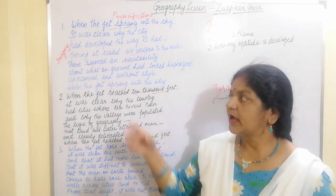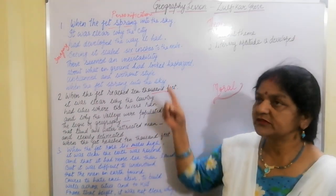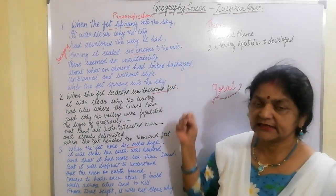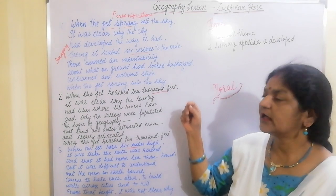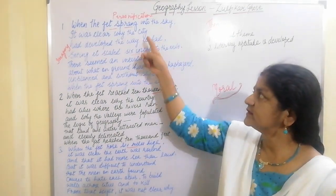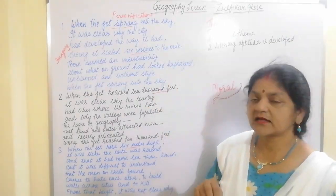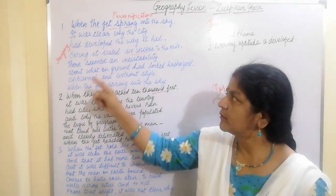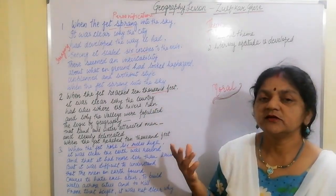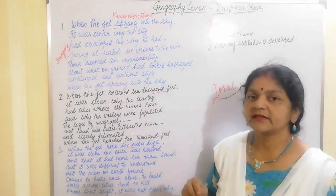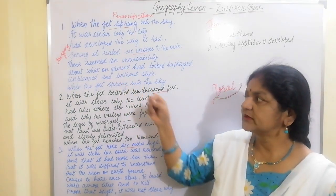Now the poetic devices used in this stanza: number one, the rhyming scheme — the last word of each line gives a musical effect. This stanza follows the rhyming scheme of ABCDABCD, and the rhyming words are sky, city, hat, mile, inevitability, haphazard, style and sky. Number two, imagery — the poet has used vivid imageries about the way the earth looks from different altitudes. In this stanza, the poet makes us look at the city from the sky and describes how it appears from the window of an aeroplane, a few hundred feet from the ground.